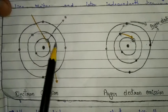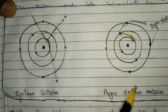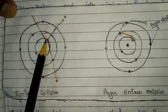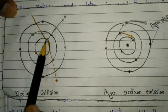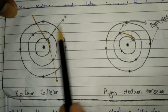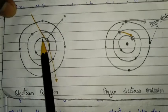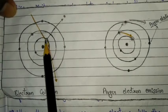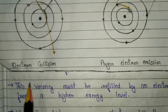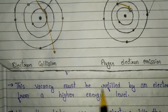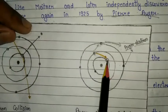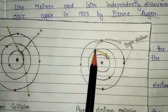Electromagnetic radiation is used in many electron spectroscopy processes. When electromagnetic radiation bombards an electron of the inner shell of an atom, the electron moves out from there and a vacancy is created in the inner shell.